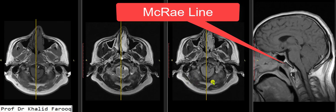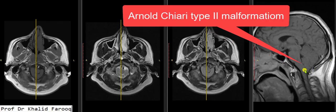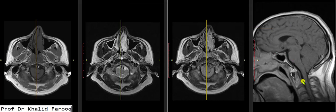We can also draw a McRae line joining the anterior and posterior lips of the foramen magnum and measure the herniated components. Thank you very much. Assalamu alaikum warahmatullahi.